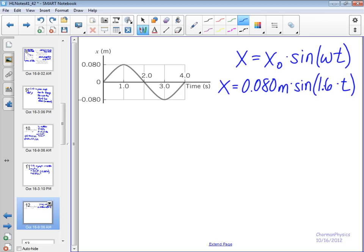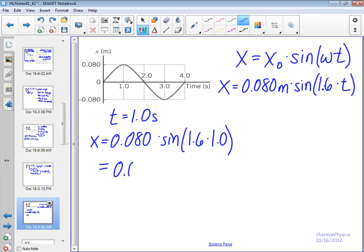So we can use this displacement function. Remember, you've got to be in radian mode, and at time equals 1.0 seconds, we can check and plug this in and find that the displacement is equal to 0.080 times sine of 1.6 radians per second times 1.0 seconds, and when you solve for that, you end up with 0.080 meters. And at one second, does that match on the graph? Yes, it does. Good. So our displacement function is accurate.